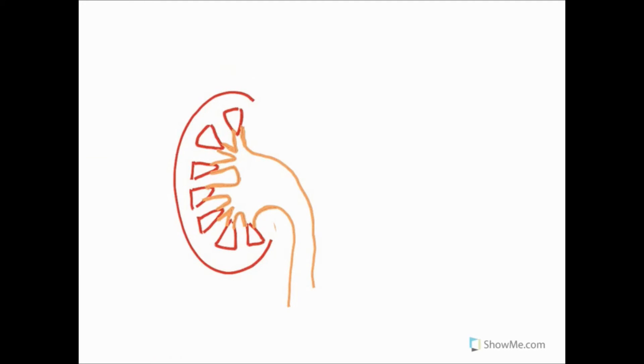So here's the inner structure or the internal structure of the kidney. There are three main parts you need to focus on: the cortex, the medulla and the renal pelvis.